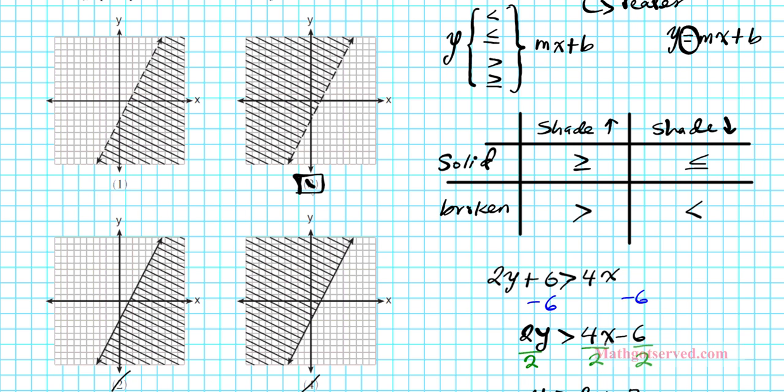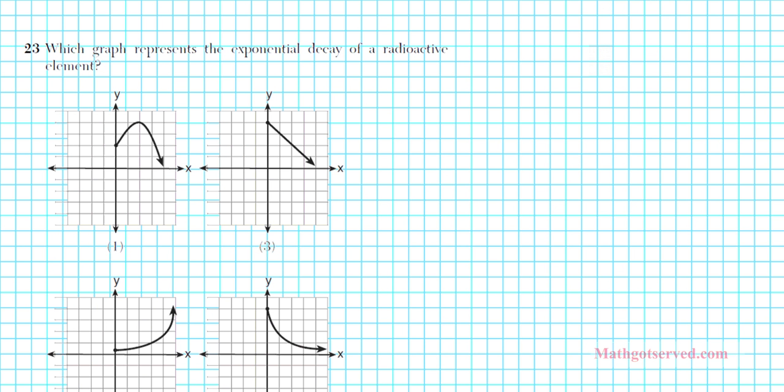So we can clearly see that our answer is option number 3. In option 3, the line is broken and the shading is upwards.